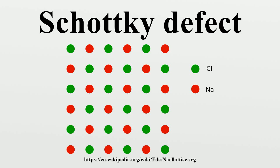Examples: This type of defect is shown in highly ionic compounds, highly coordinated compounds, and where there is only a small difference in sizes of cations and anions of which the compound lattice is composed. Examples include NaCl, KCl, KBr, CsCl, and AgBr.